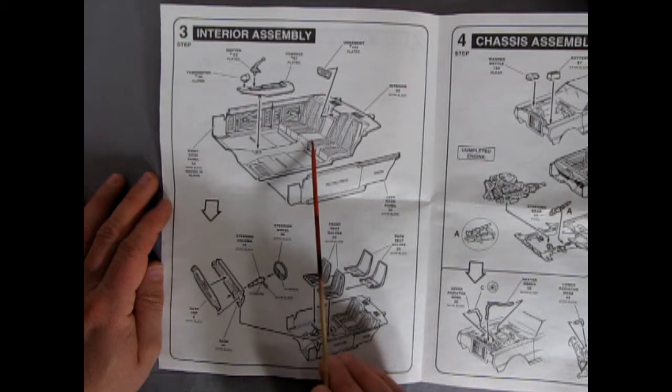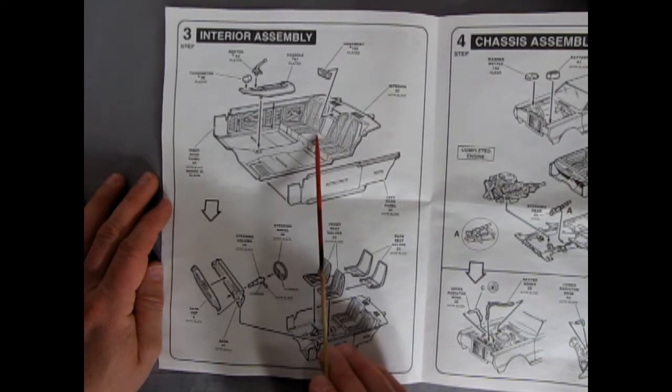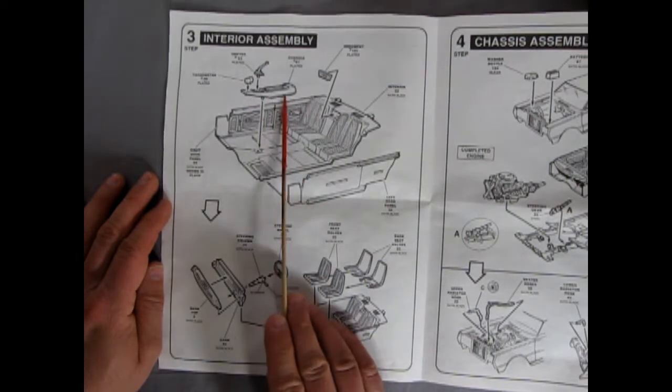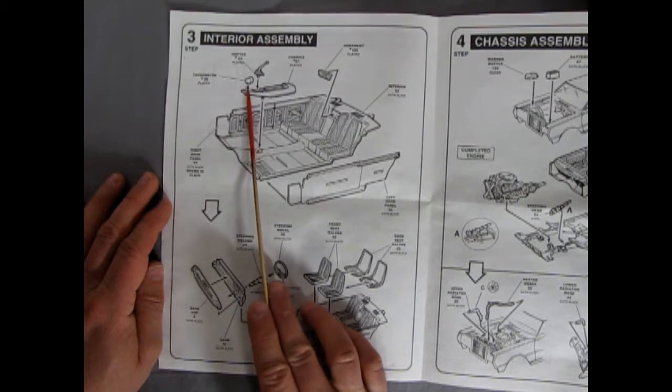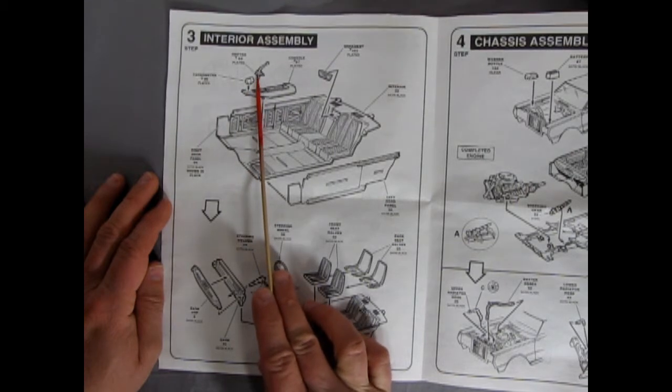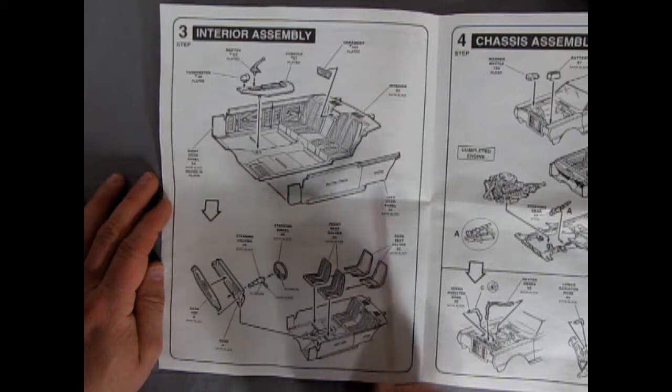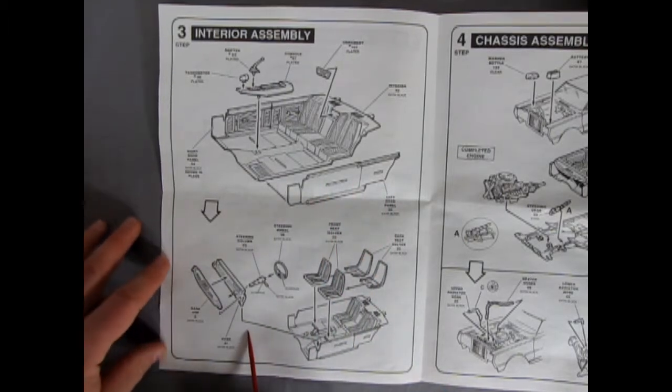And the only thing that is molded in place is of course the rear bench, or pseudo bucket seats. This would be a cushion in here as well. There we have our console, as well as the tachometer and the floor shifter. You paint that little boot there flat black.